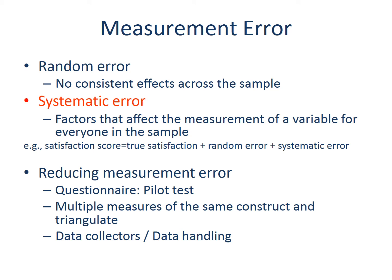However, systematic error involves factors that affect the measurement of a variable for everyone in the sample. For example, if a word used in the question was sensitive and upsetting for your sample, everyone in the sample is affected. Thus, the measured satisfaction score with the institution might be more negative than the true satisfaction level would have been. This error introduces bias to the variable.